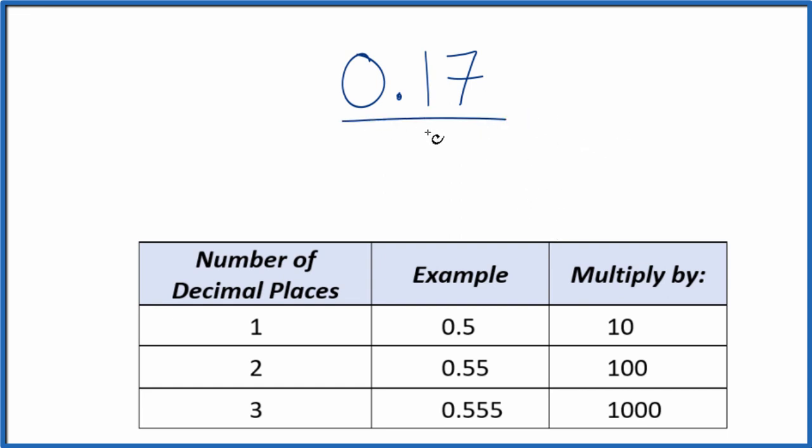First off, let's just call it 0.17 over 1. So it's still 0.17. We're just dividing by 1, but now we have the start of a fraction.